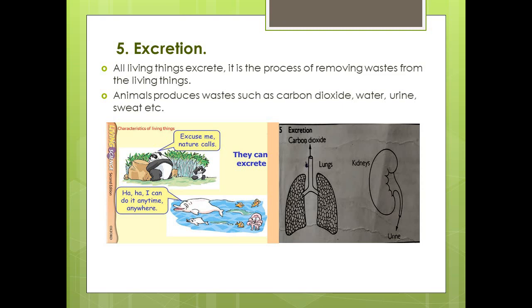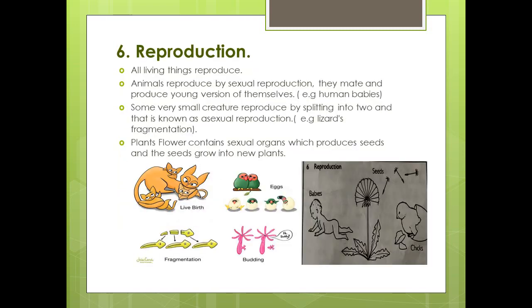Excretion — all living things excrete. Excretion is the process of removing waste substances like carbon dioxide gas, urine, water, and sweat from our body. Plants also excrete — you may have seen autumn plants with orangish or brownish leaves. What happens is plants excrete their waste products onto the leaves; the waste gets stuck, the chlorophyll dies, and the leaves fall off. So plants are also part of excretion.